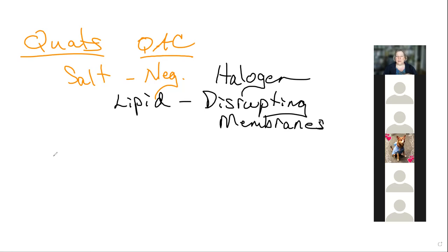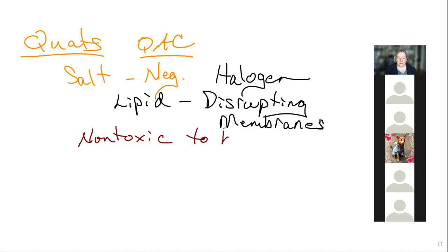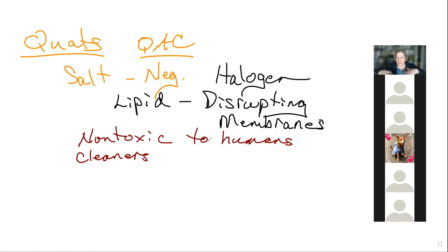You won't get blistering or the cracking and skin damage that comes from using bleach without gloves. Quats you can use all day without that happening — they are non-toxic to humans. But they are low-level disinfectants. A good rule of thumb: the less toxic it is to humans, the less toxic it tends to be to the microbes you're trying to kill.